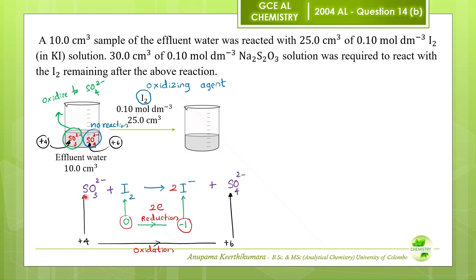The oxidation state of sulphur in the sulphite ion is plus 4, and the oxidation state of sulphur in the sulphate ion is plus 6. The oxidation state of sulphur changes from plus 4 to plus 6. Therefore, this oxidation process involves 2 electrons. The number of electrons involved in the reduction and the oxidation process are the same. Therefore, we will balance the number of oxygen atoms. There are 3 oxygen atoms on the left and 4 oxygen atoms on the right. Therefore, we need to add 1 water molecule to the left.